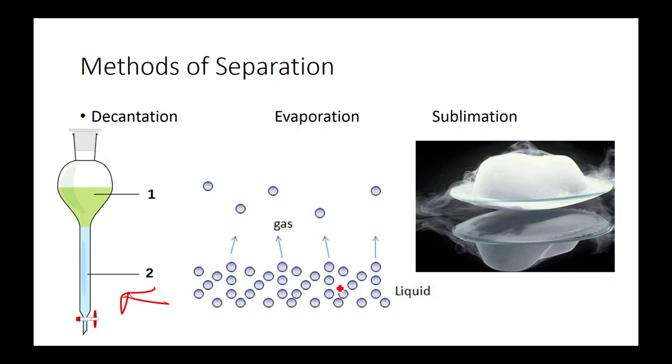Evaporation is making liquid into gas. How do you get water out of a beaker? You evaporate the water. Sublimation is where you transform from solid to gas, and then gas to solid is known as deposition.